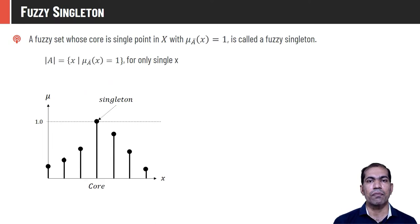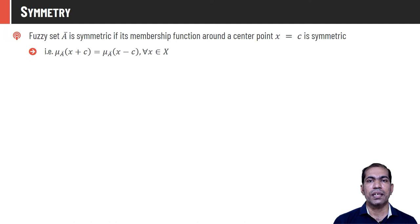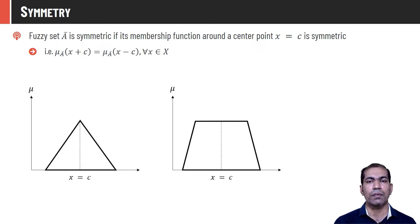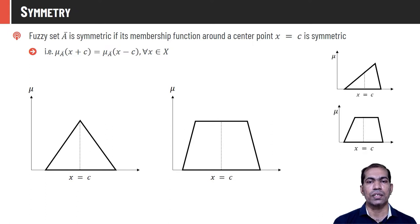Fuzzy set Ā is symmetric if its membership function around a center point x = c is symmetric — points equidistant from c on either side have identical membership values. Mathematically: μ_Ā(x + c) = μ_Ā(x − c) for all x. Alpha cut of Ā is a crisp set A_α containing all elements whose membership value is ≥ α. Strong alpha cut A_{α+} contains elements whose membership value is strictly > α.